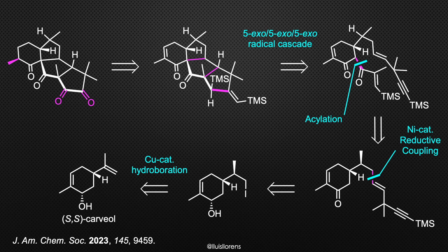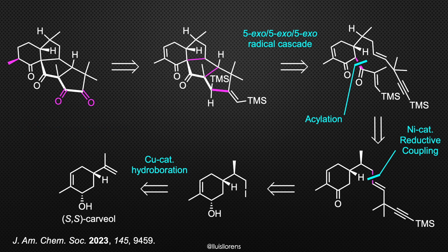Hello everyone. In this video I'm going to talk about the synthesis of Averuron, a natural product that bears a unique 6-5-5-5 tetracyclic ring system, 4 ketones, 7 stereocenters, and 3 quaternary carbon centers.